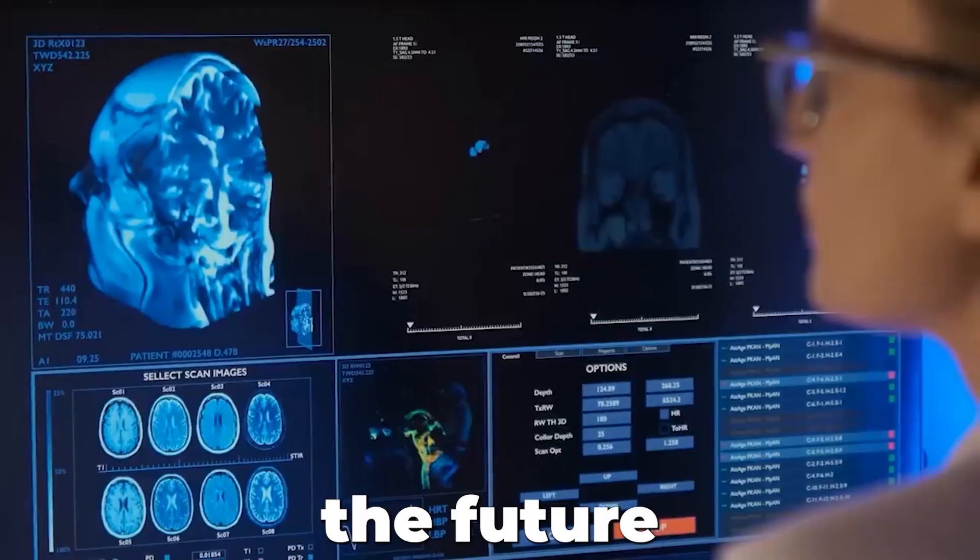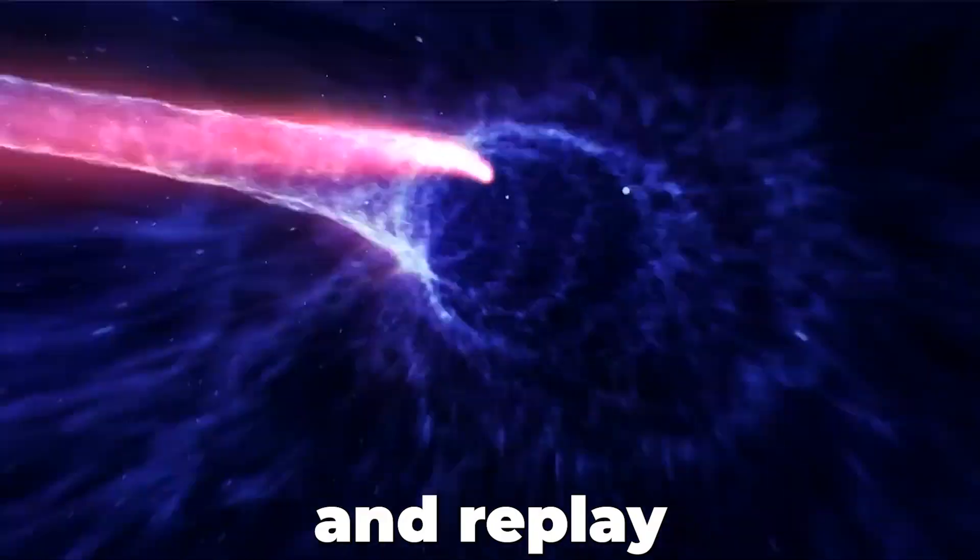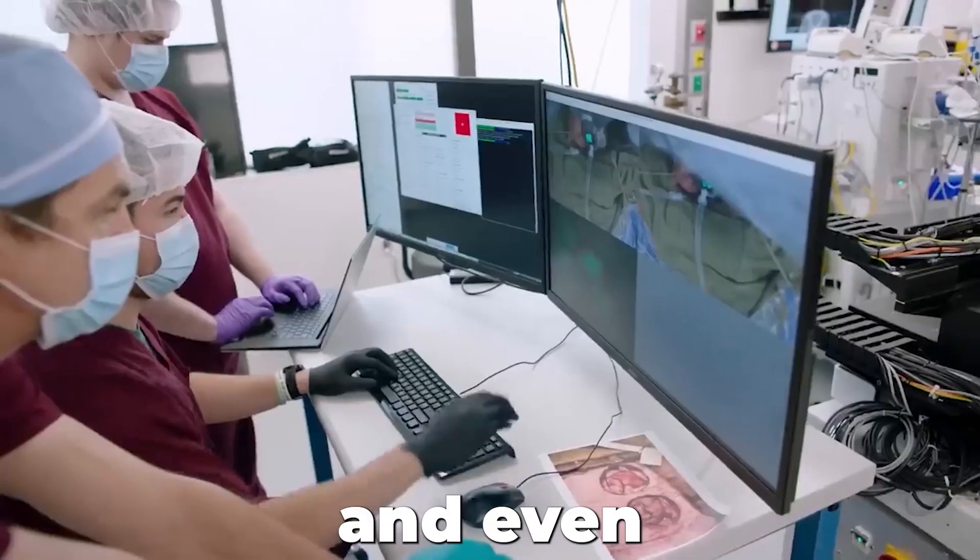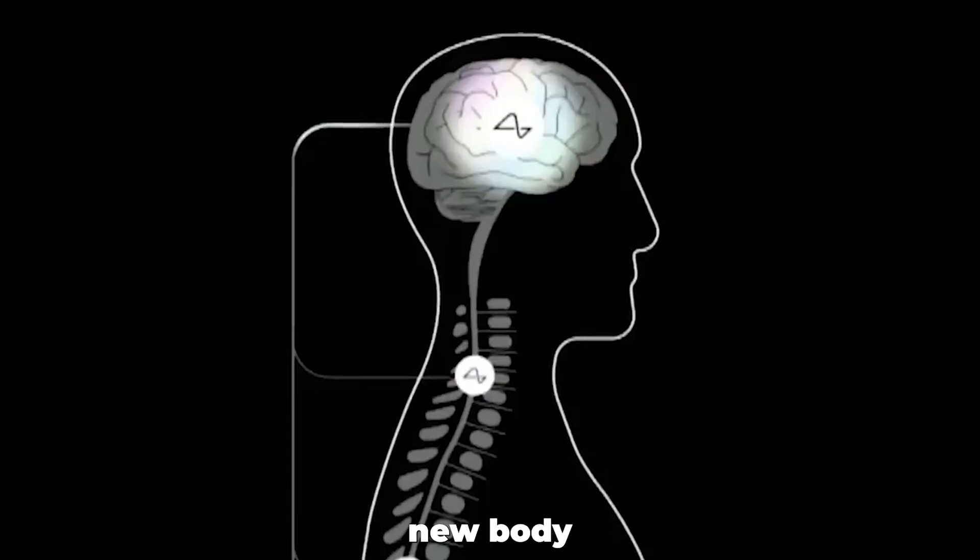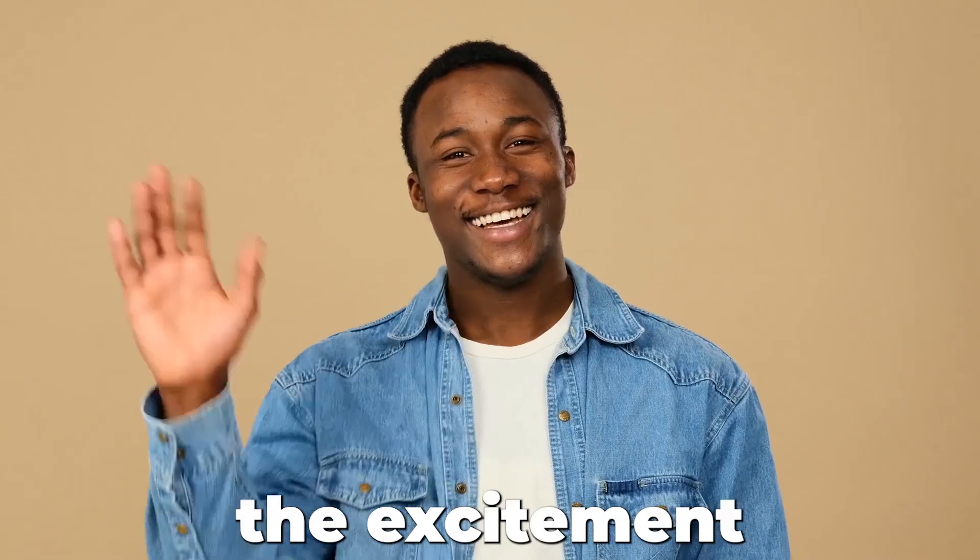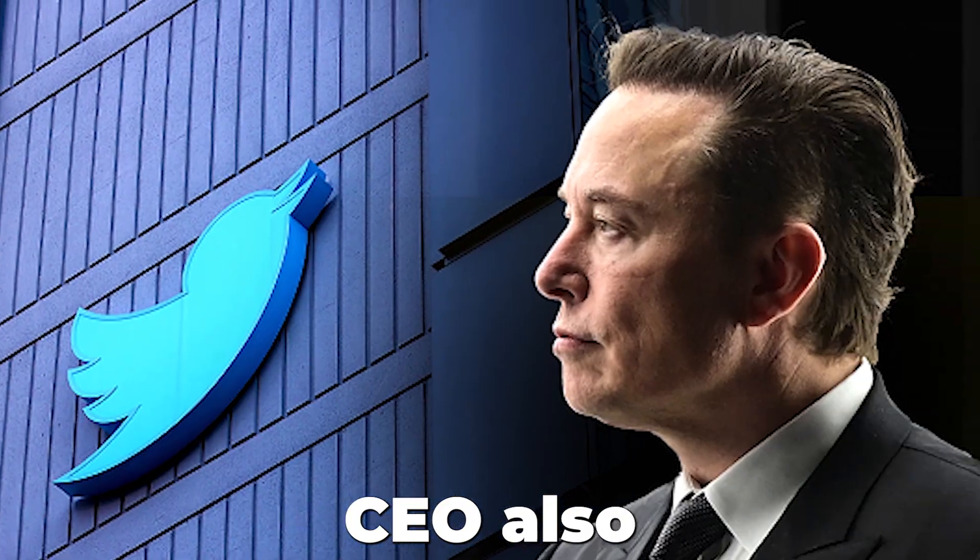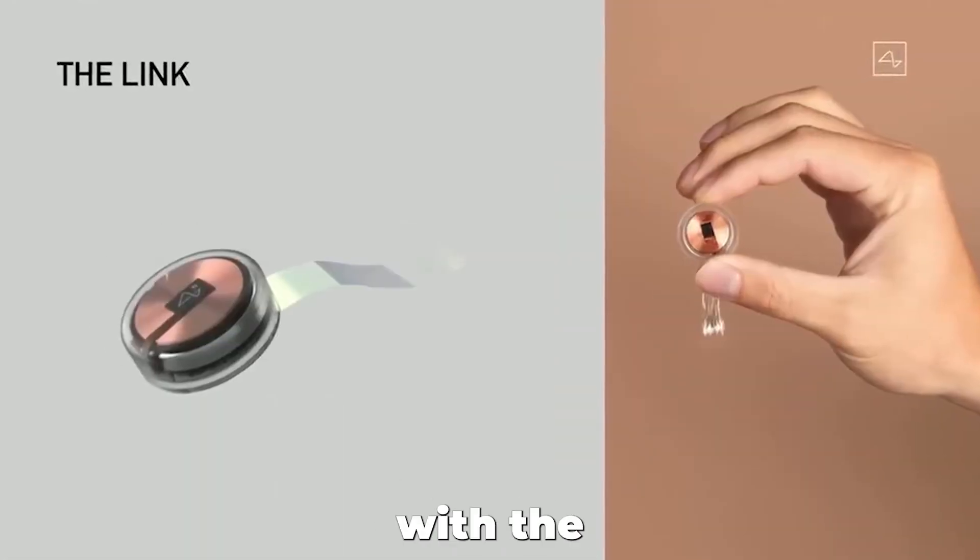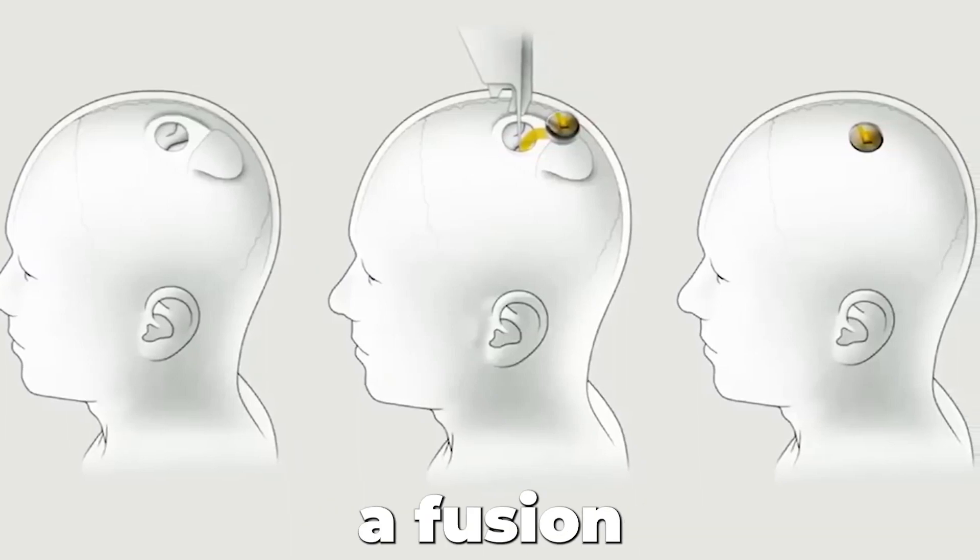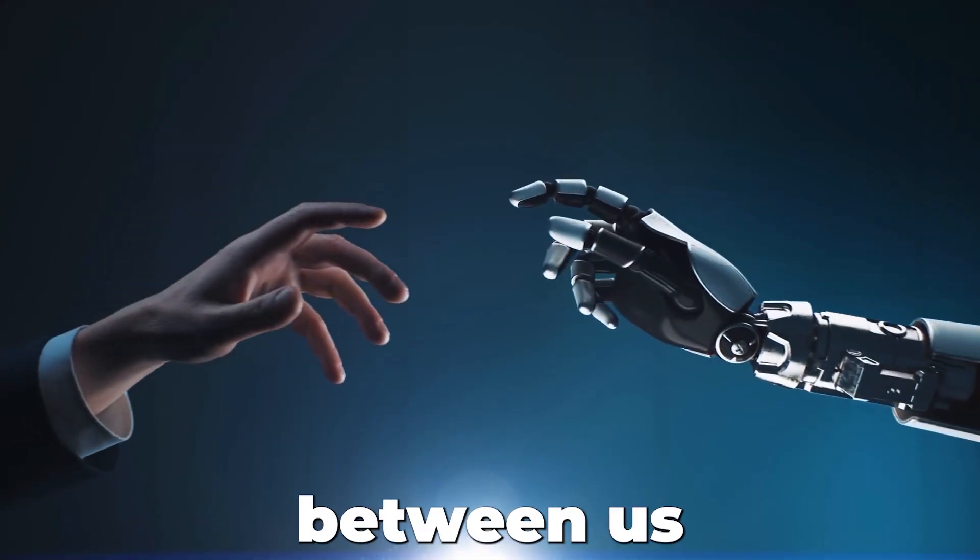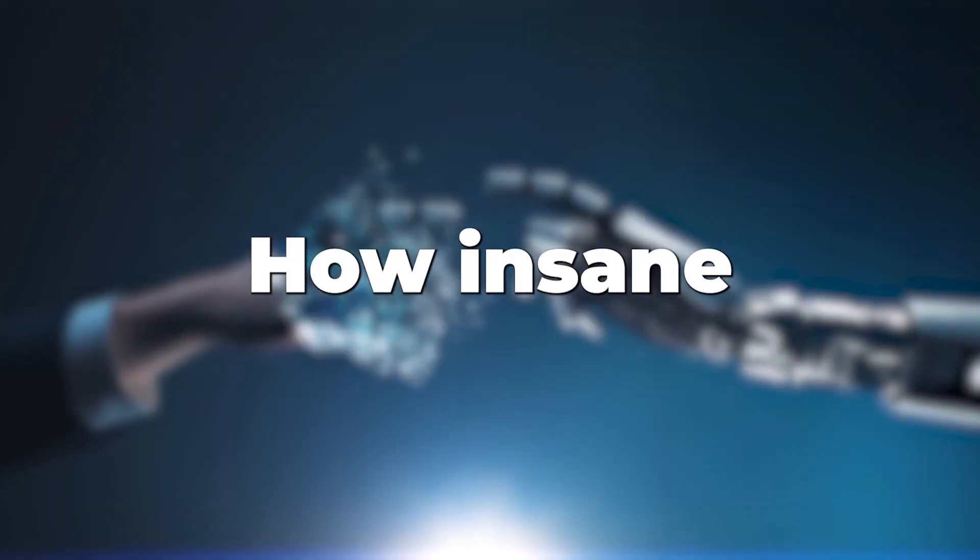Musk added that in the future, we would be able to save and replay memories. So this stresses that we could literally back up our memories like files and even transfer them into a brand new body or a kick-ass robot body. Oh, yes, please. But the excitement doesn't stop there, my friend. The Twitter CEO also hinted at a world where words will become overrated. Yep, with the Neuralink, he's envisioned a fusion of humans and AI, where we can communicate without uttering a single word. Talk about a symbiotic relationship between us and the machines. How insane is that?